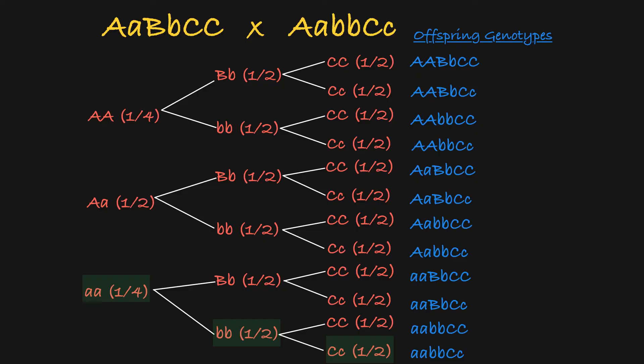Now let's say I want to calculate the probability of having offspring with this genotype. Because these are each independent events, I will use the rule of multiplication, multiplying each of these probabilities together to get the answer.